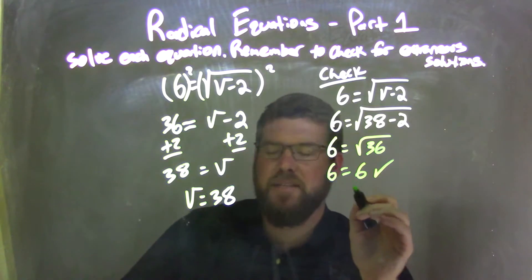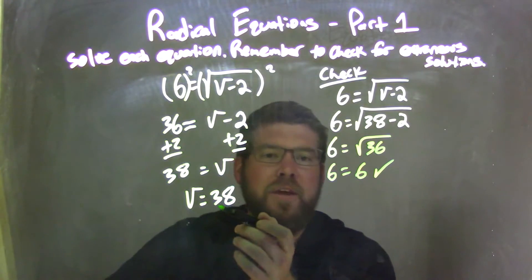And there we go. 6 did equal 6, so we're good. And so our answer of v equals 38 was correct.